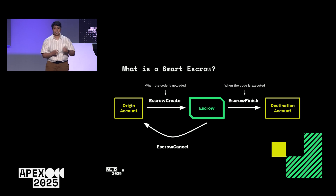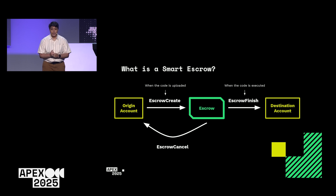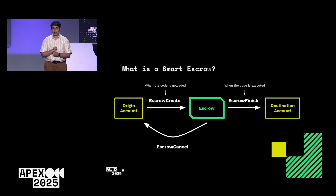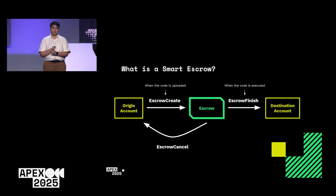Revisiting our diagram: when you create your escrow, you upload the code alongside it. It essentially becomes part of the contract you're creating. The code is executed when you try to finish the escrow — that's when all release conditions are checked: is it the right time? Has enough time passed? Is there a condition requiring a password? And does my new code block say I can release the escrow?